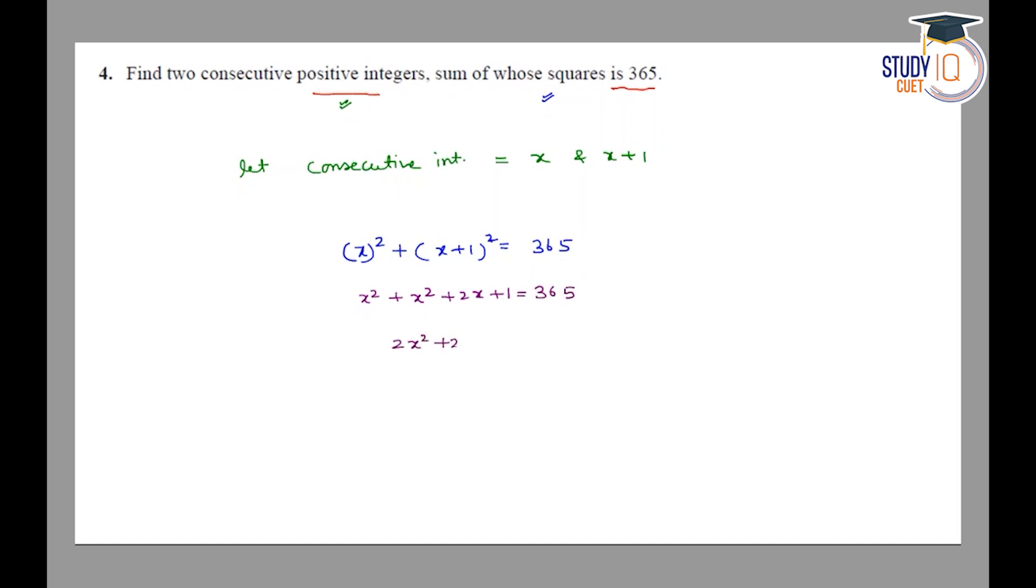It will be 2x squared plus 2x minus 364 equal to 0. On taking 2 common, we get x squared plus x minus 182 equal to 0.